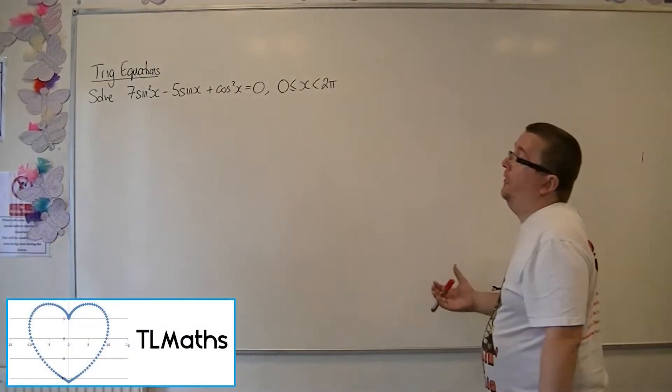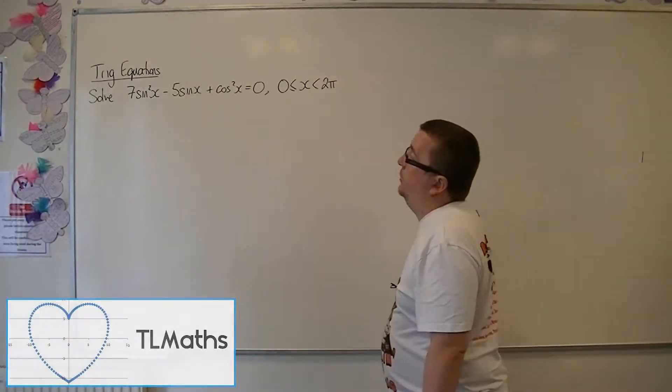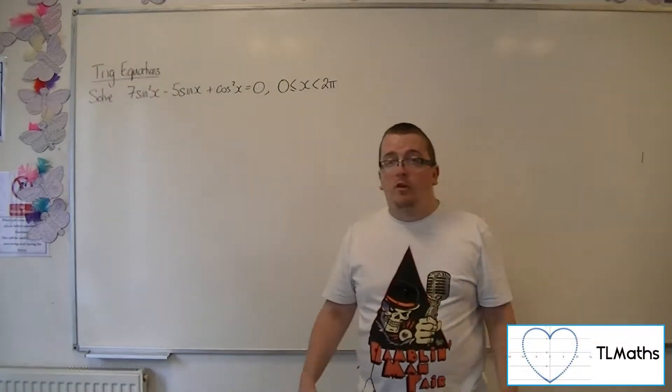So we're going to solve 7sin²x - 5sinx + cos²x = 0 between 0 and 2π radians.